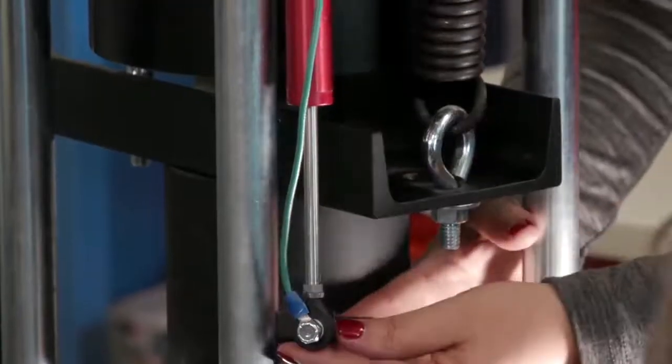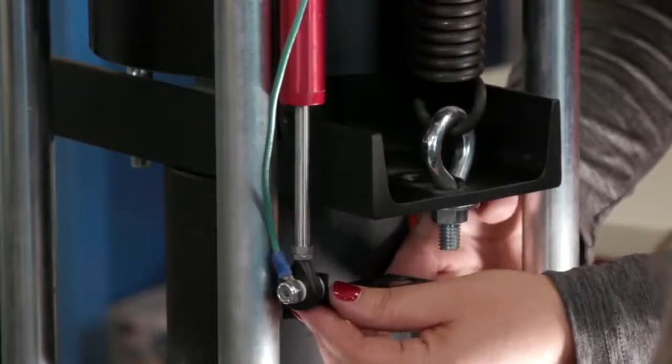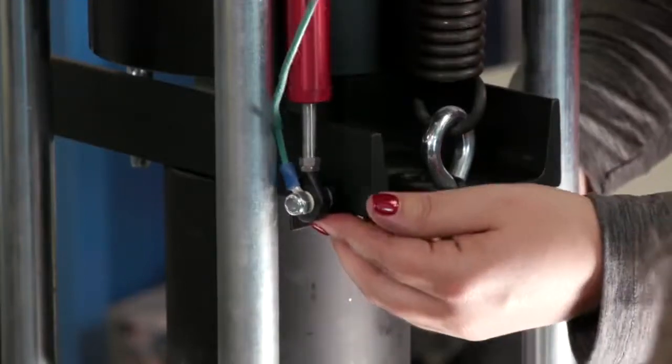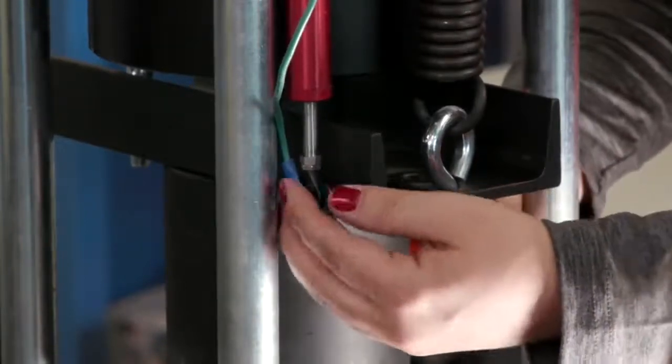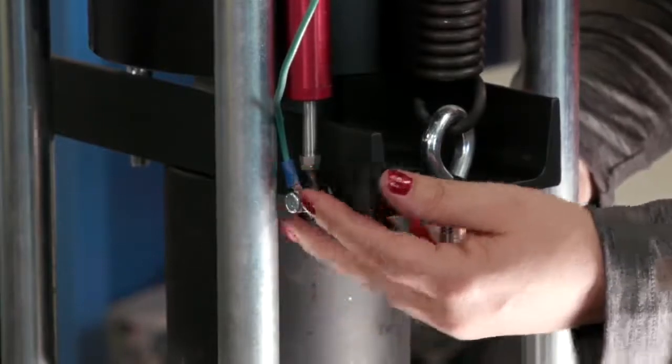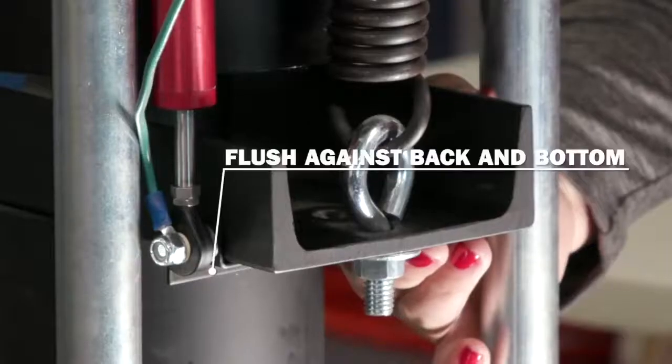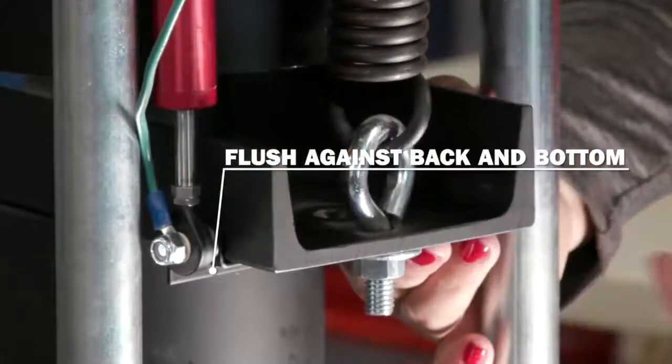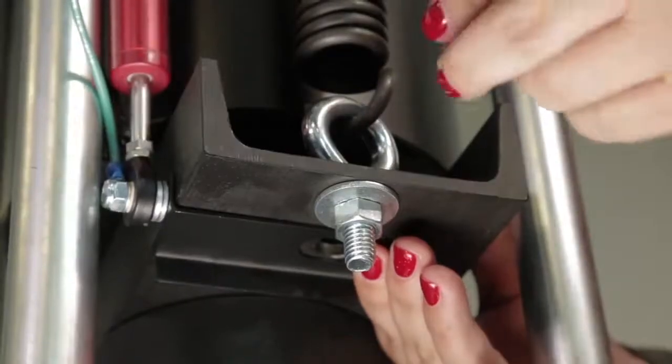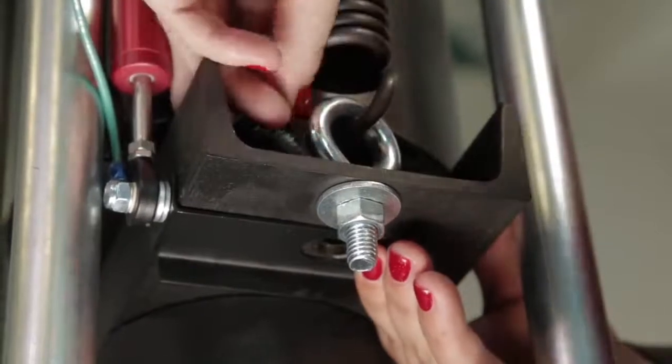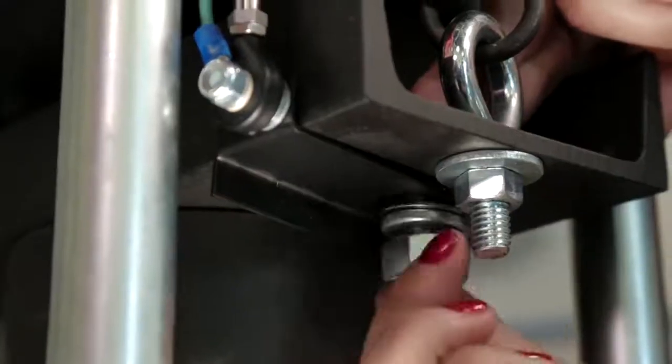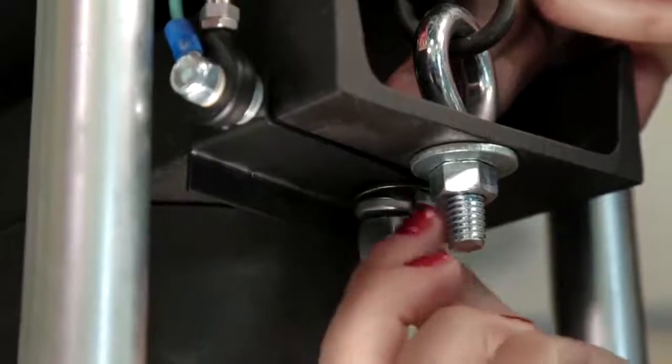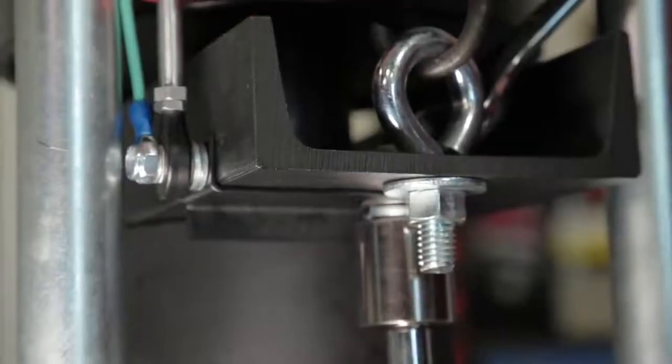Now you'll install the bottom of the sensor assembly to the channel using the same hole that previously attached the actuator rod. Line up the L bracket on the sensor assembly under the channel so that it sits flush against both the back and bottom of the channel. Use the bolt provided to go through the top of the channel and the opening in the bracket. Attach with the washer, lock washer, and hex nut. Tighten firmly.